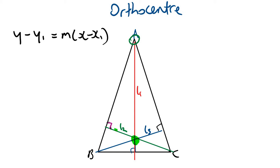There is one other concurrency we look at but we solve it geometrically — it's called the incentre. It's when you can draw a circle that touches the sides of the triangle. What we need to do is find the bisector of an angle using geometry. The three angle bisectors intersect at the incentre, but we're not going to use coordinate geometry to solve that.